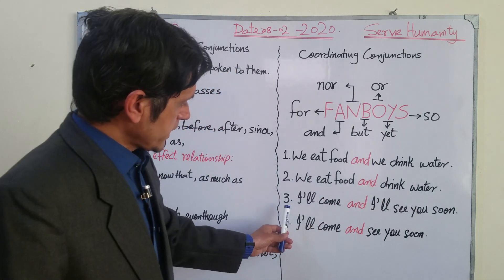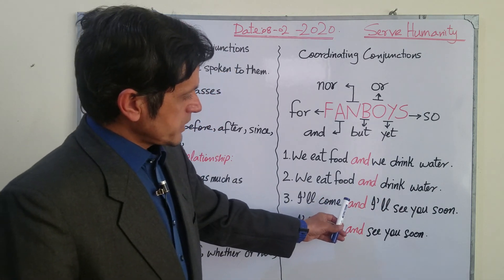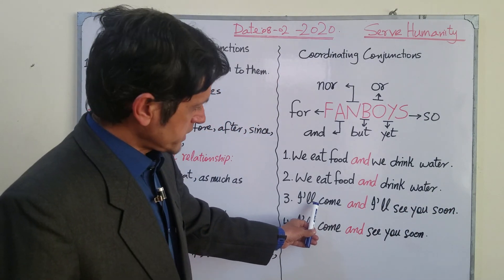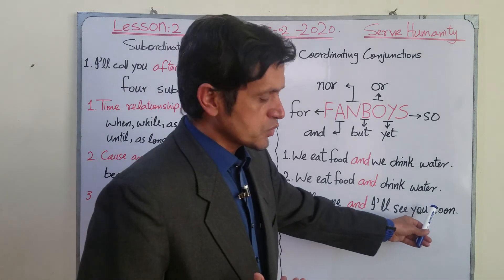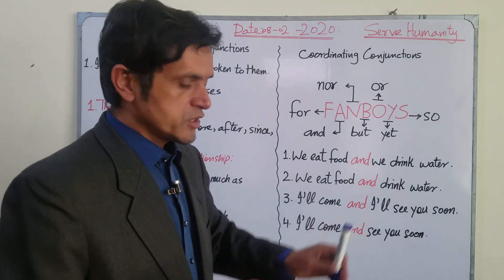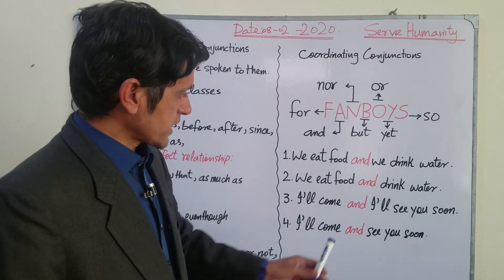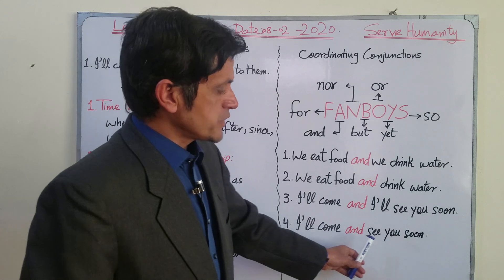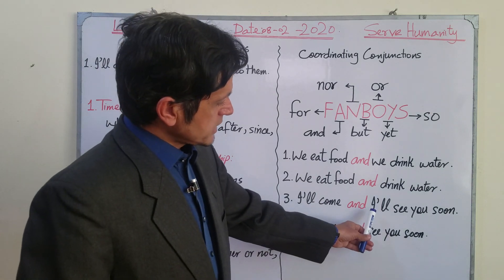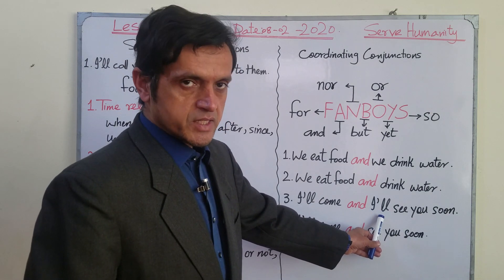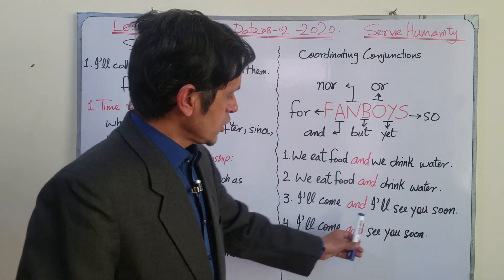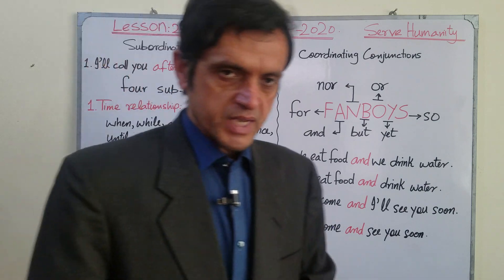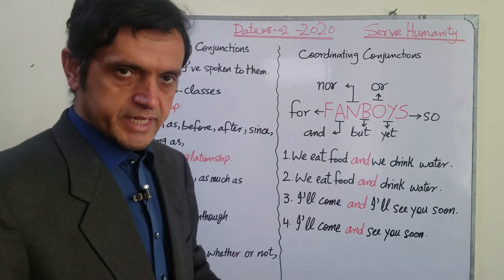Another example: 'I'll come' is an independent clause and 'I'll see you soon' is also an independent clause. These two are connected by the conjunction 'and.' We can delete the subject as well as the auxiliary and say 'I'll come and see you soon.' This is the basic function of a coordinating conjunction.